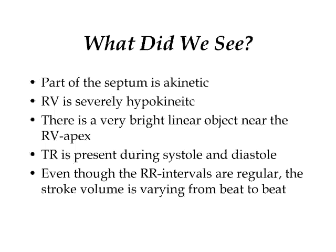Let's put this all together. Part of the septum is akinetic. The inferior wall is akinetic. The right ventricle is severely hypokinetic. There is a bright echo signal near the RV apex, and there is tricuspid regurgitation in both systole and diastole. Even though the R-R intervals are regular, the stroke volume — as demonstrated through the pulse-wave signal in the LVOT — is varying from beat to beat.